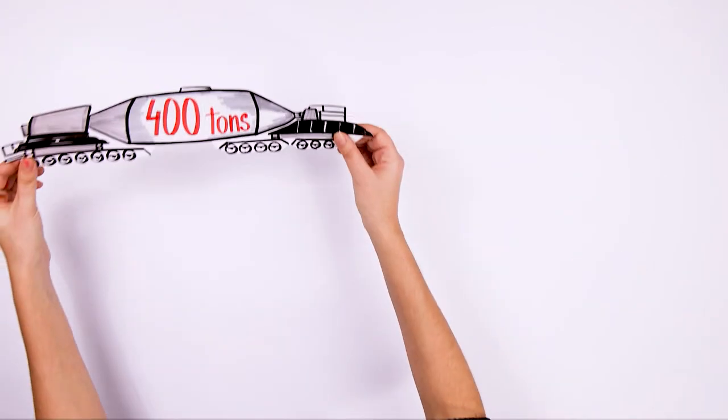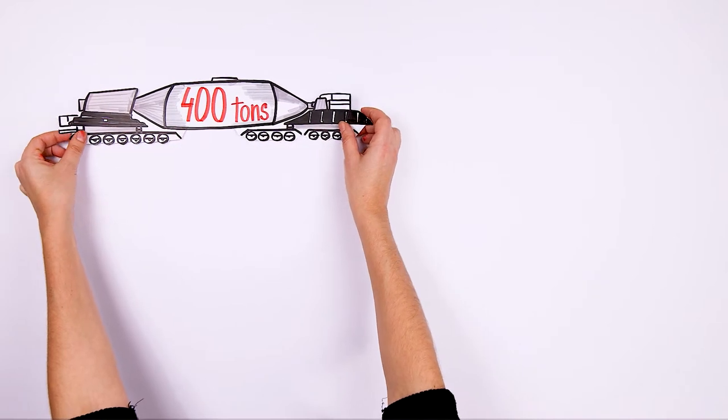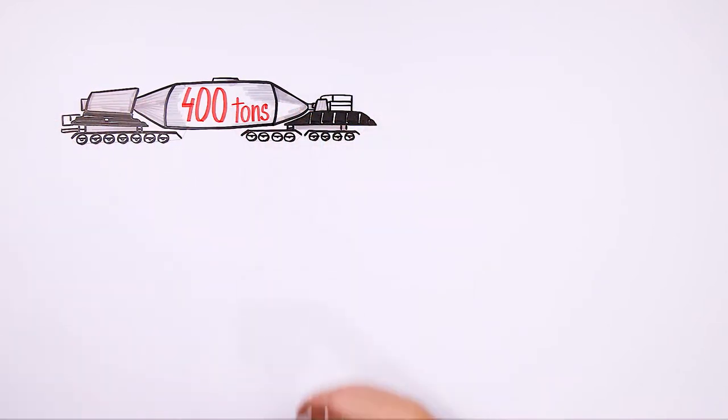Pig iron is transported from the furnace to the steelworks in huge torpedo vats, each holding up to 400 tons.